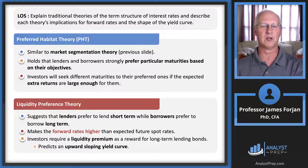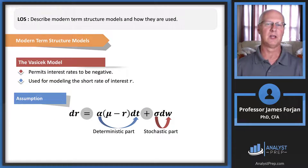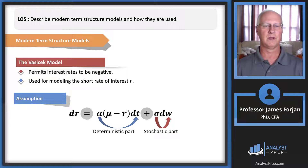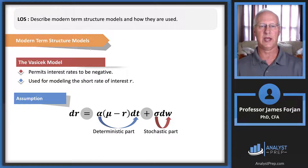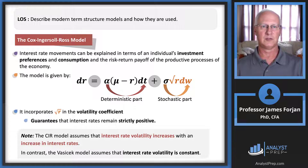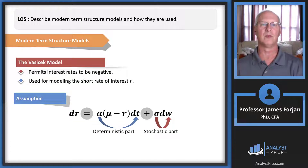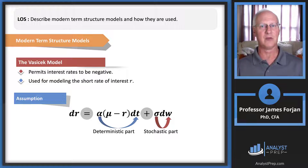Now let's look at modern term structure models. What we're trying to do is predict some future interest rate. In each of these models, the left-hand side of the equation is dr — a small change in interest rate. Each model has a deterministic part (related to change in time, dt) and a stochastic part (representing random changes in the interest rate), with a standard deviation term sigma capturing the risk element.